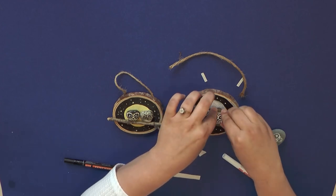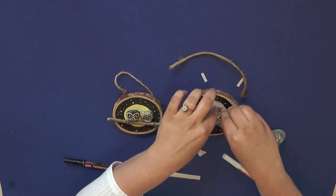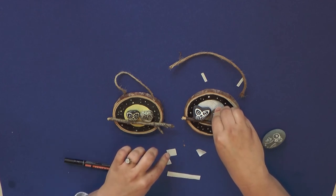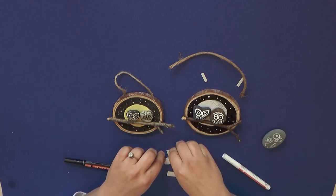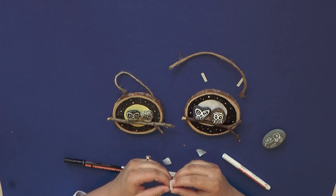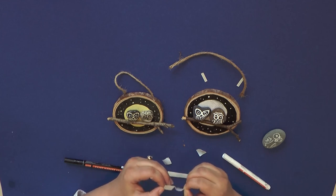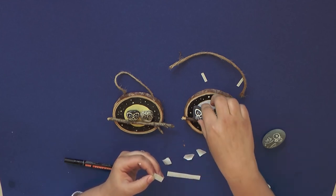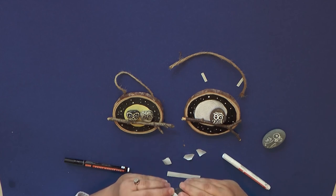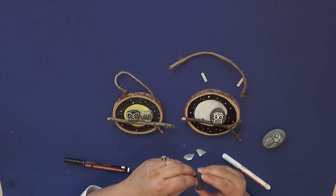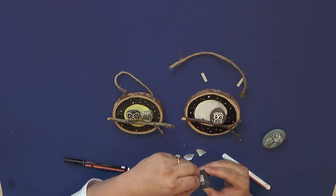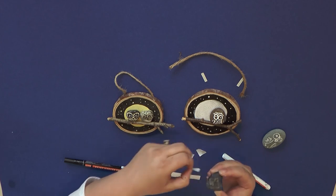And I will push them down. And these are extra strength glue dots so they should hold the owls and branch in place pretty nicely. And if you do it this way you don't actually have to touch the glue dots.